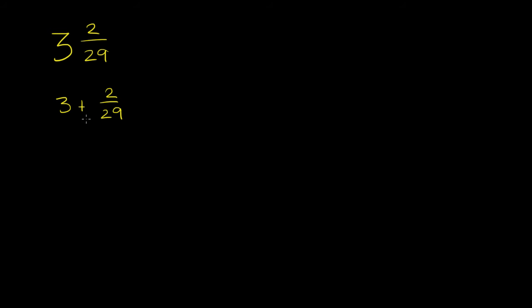We could try to add these two things together. If we're going to add them, we need a common denominator. So we need to rewrite 3 as something over 29. We could rewrite this as 3/1 plus 2/29.